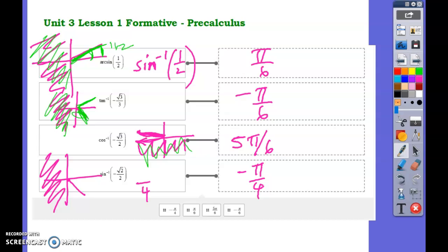It's negative, so we know that has to be, where is the cosine negative? Cosine is x, it's going to be in quadrant 2. And that's negative root 3 over 2. If you know your unit circle, that's going to be 5 pi over 6.